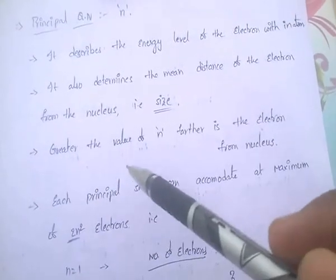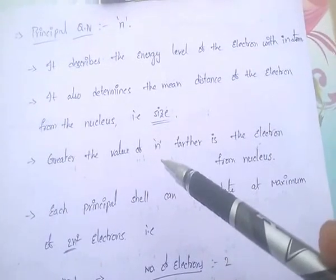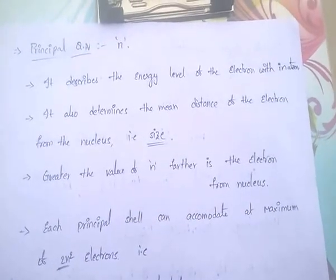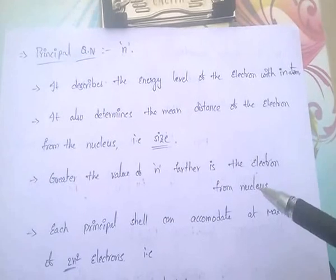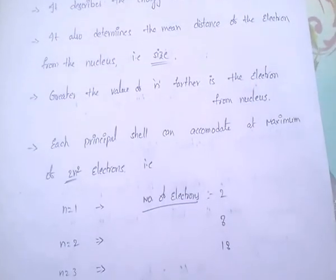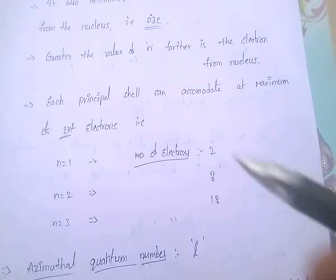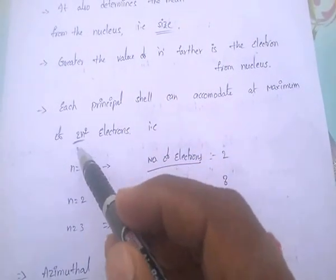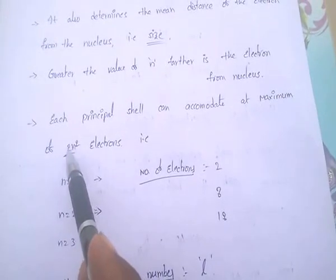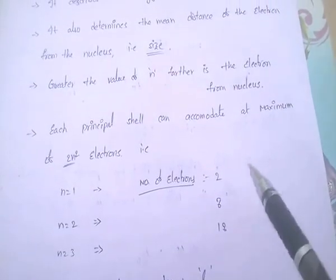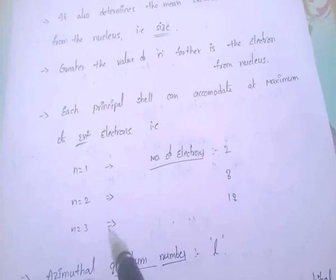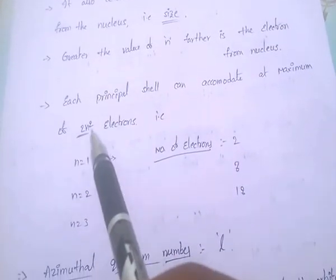If greater the value of n, farther is the electron from the nucleus. If n is less, the electron is nearest to the nucleus. Each principal shell can accommodate a maximum of 2n² electrons. If n=1, electrons = 2×1² = 2. If n=2, electrons = 2×2² = 8. If n=3, electrons = 2×3² = 18.